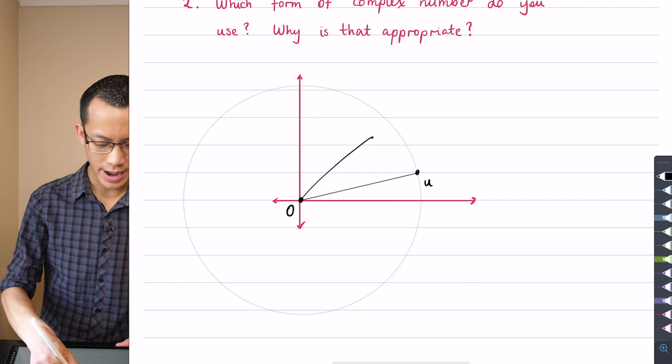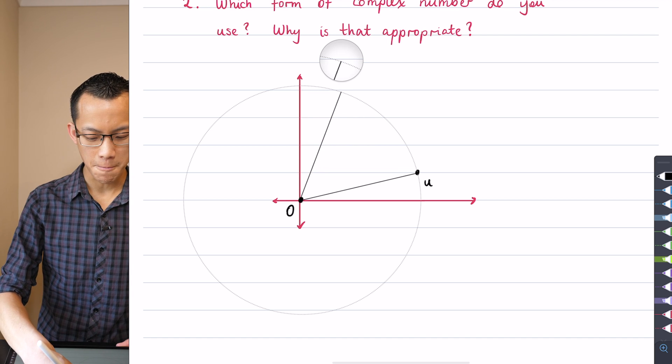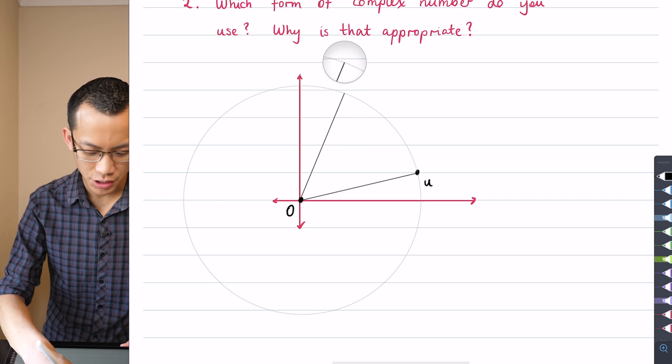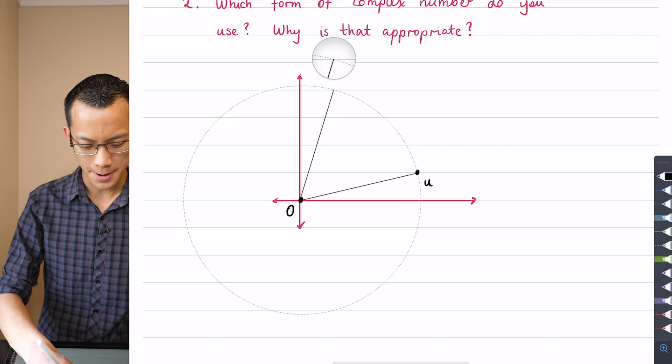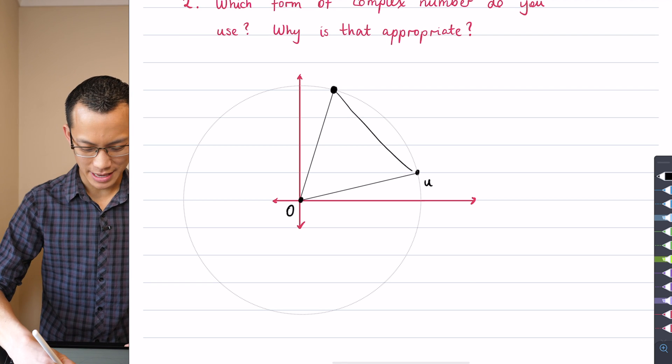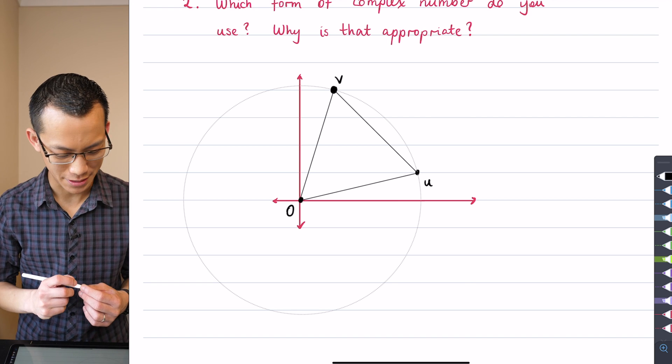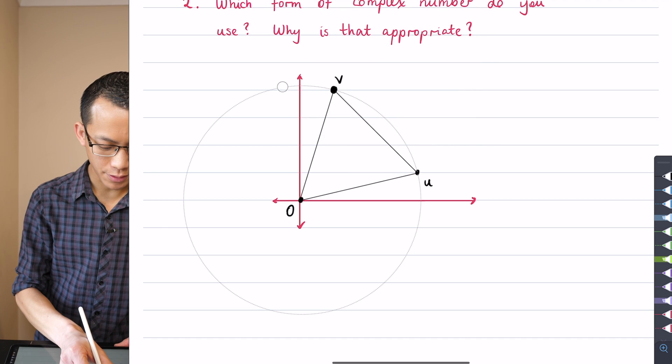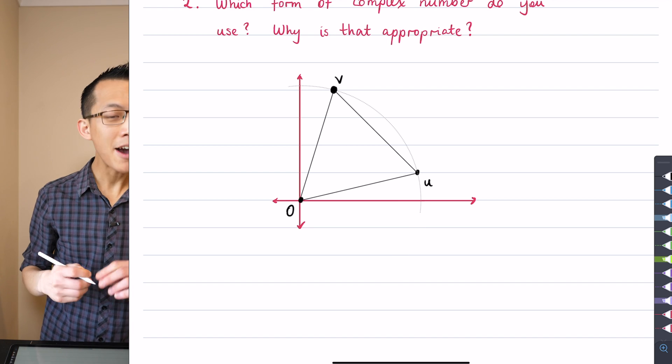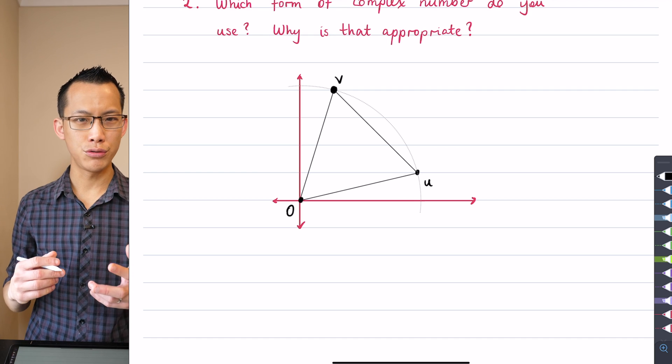Since the origin is one of my vertices and I've got this length from 0 to U, 0 to V has to be the same distance. So that's why I'm going to put V on the circumference of this circle. Where on the circumference can I sit so that I'm going to get not only 0 to V being the same distance, but U to V being the same distance? I'm just eyeballing this - I reckon that's pretty equilateral. So there is my diagram.